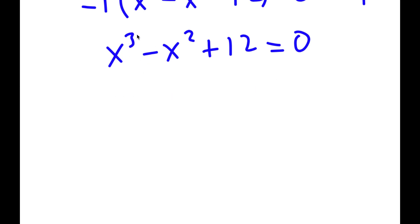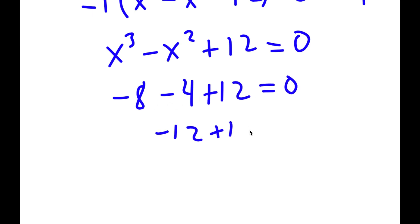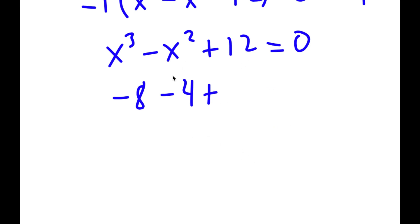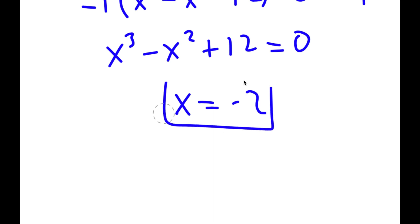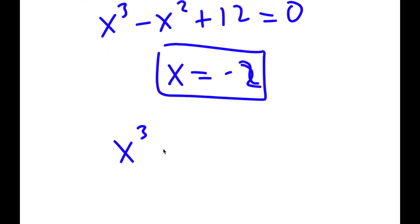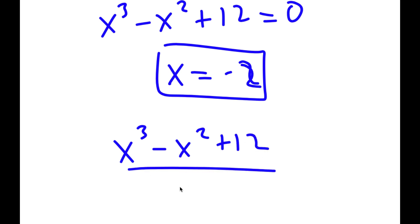Plugging in negative 2: negative 2 to the power of 3 is negative 8, minus negative 2 squared which is 4, plus 12 equals 0. Negative 8 minus 4 is negative 12, plus 12 is 0. So 0 equals 0, meaning x equals negative 2 is a solution. Using this solution, I can find the rest.